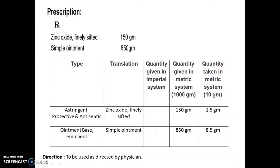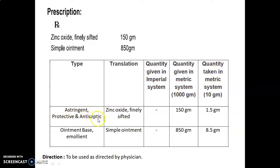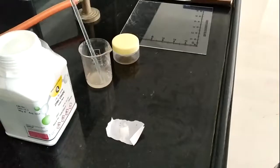The factor is calculated as quantity required divided by quantity given = 10/1000 = 0.01. The prescription (Rx) contains zinc oxide finely sifted 150 g and simple ointment 850 g. In the formula table: zinc oxide finely sifted is used as an astringent, protective, and antiseptic — quantity given is 150 g, so taken quantity is 1.5 g. Simple ointment, used as an ointment base and emollient, quantity given is 850 g, so taken quantity is 8.5 g. Direction: to be used as directed by a physician.